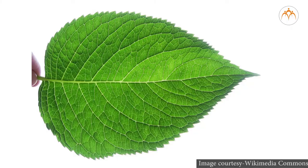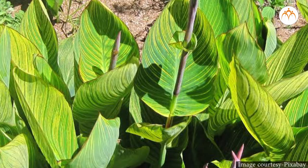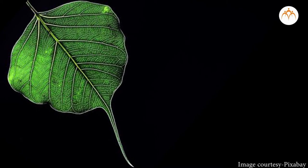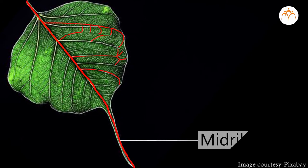Students, form a small group of three to four people and visit a nearby garden, or the variety of plants growing in your school. Collect one leaf each of the following plants: peepal, mango, hibiscus, grass, maize, and canna. Study each leaf carefully — hold the leaf against sunlight and observe the lines called veins on the lamina. Notice their pattern and look for the large prominent vein in the center, called the midrib.